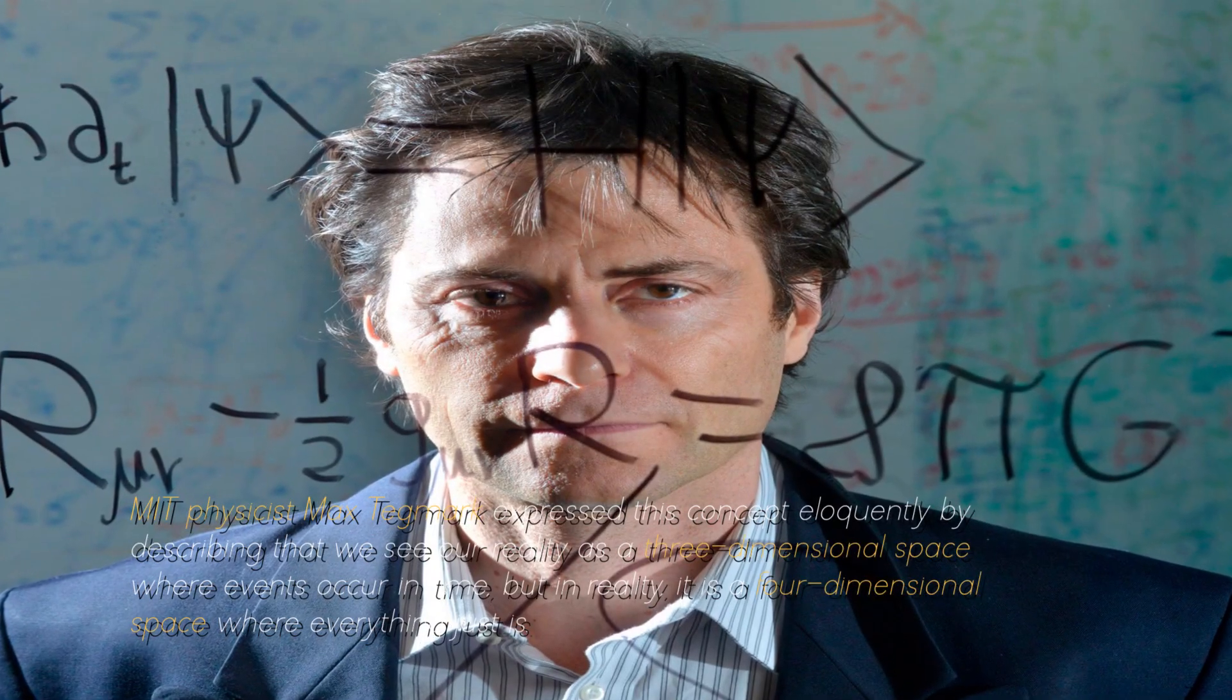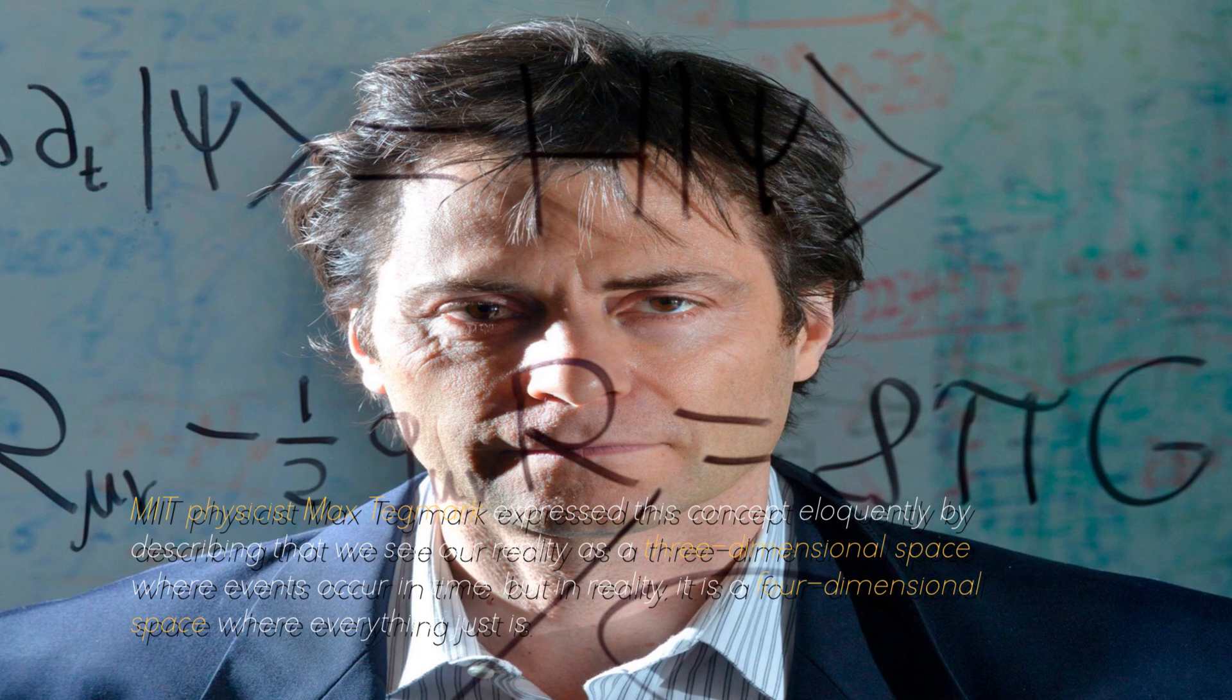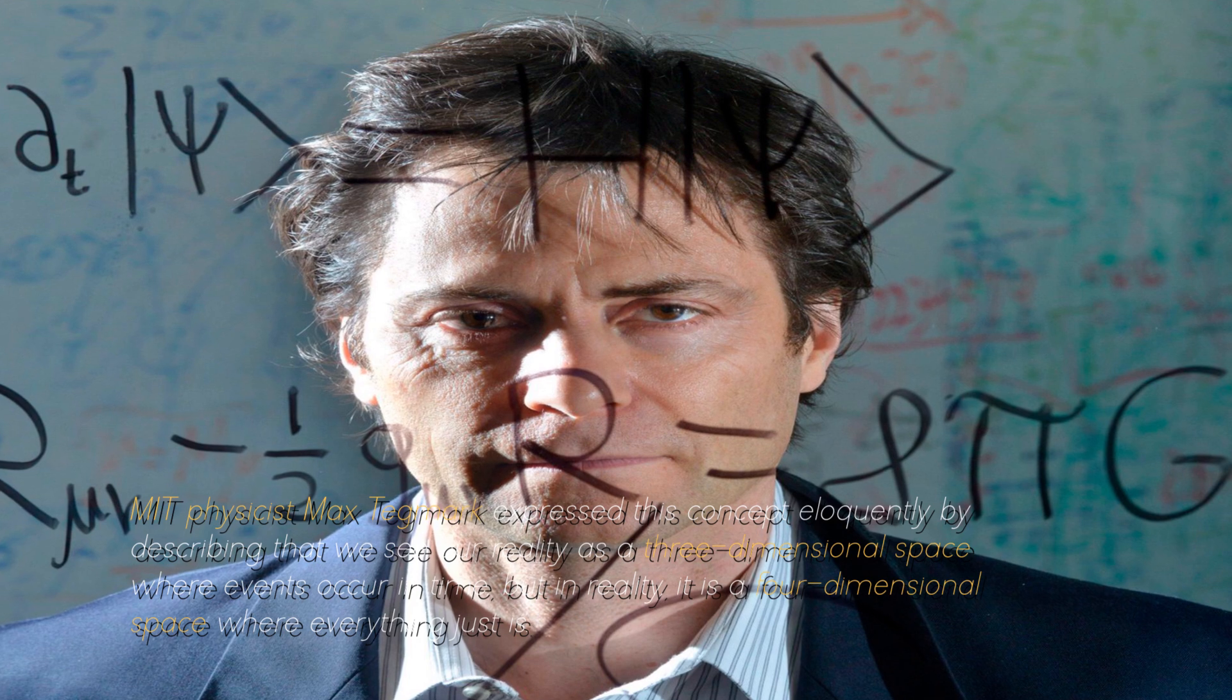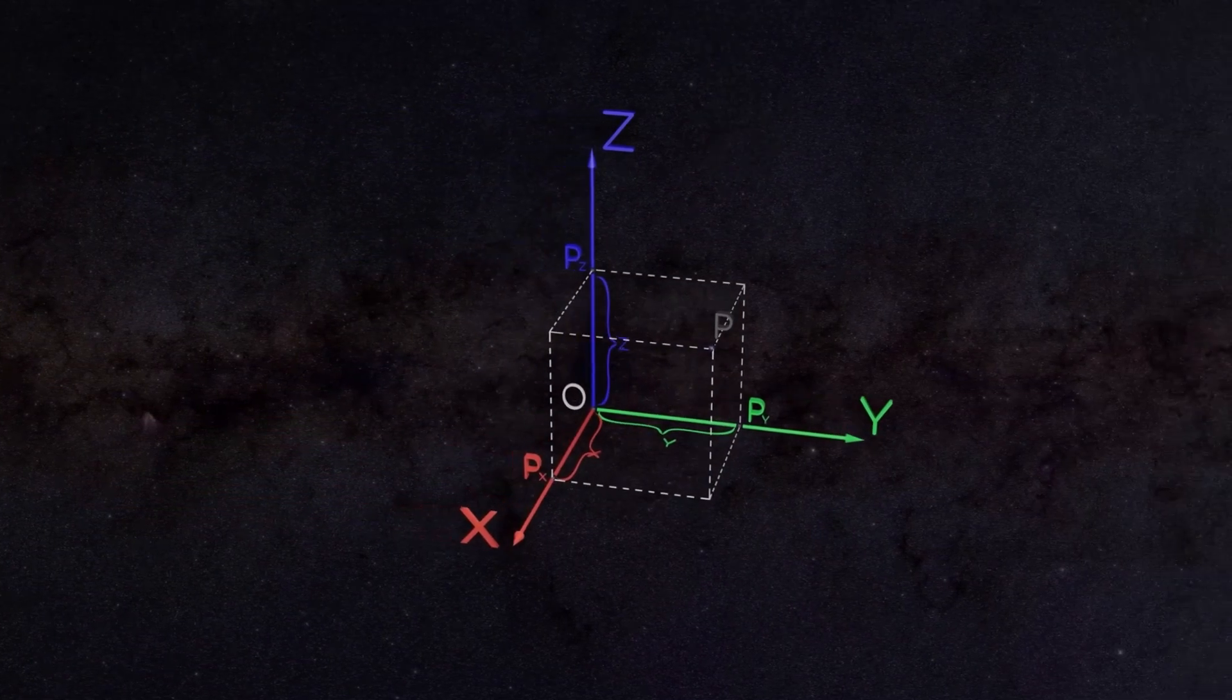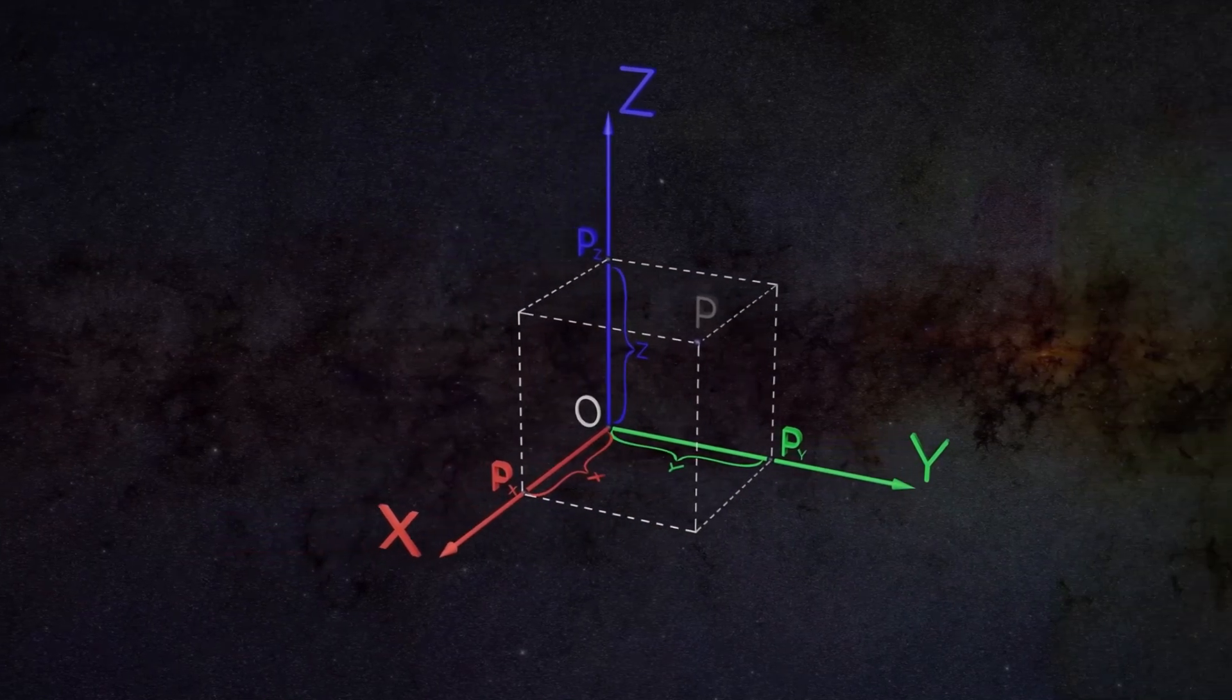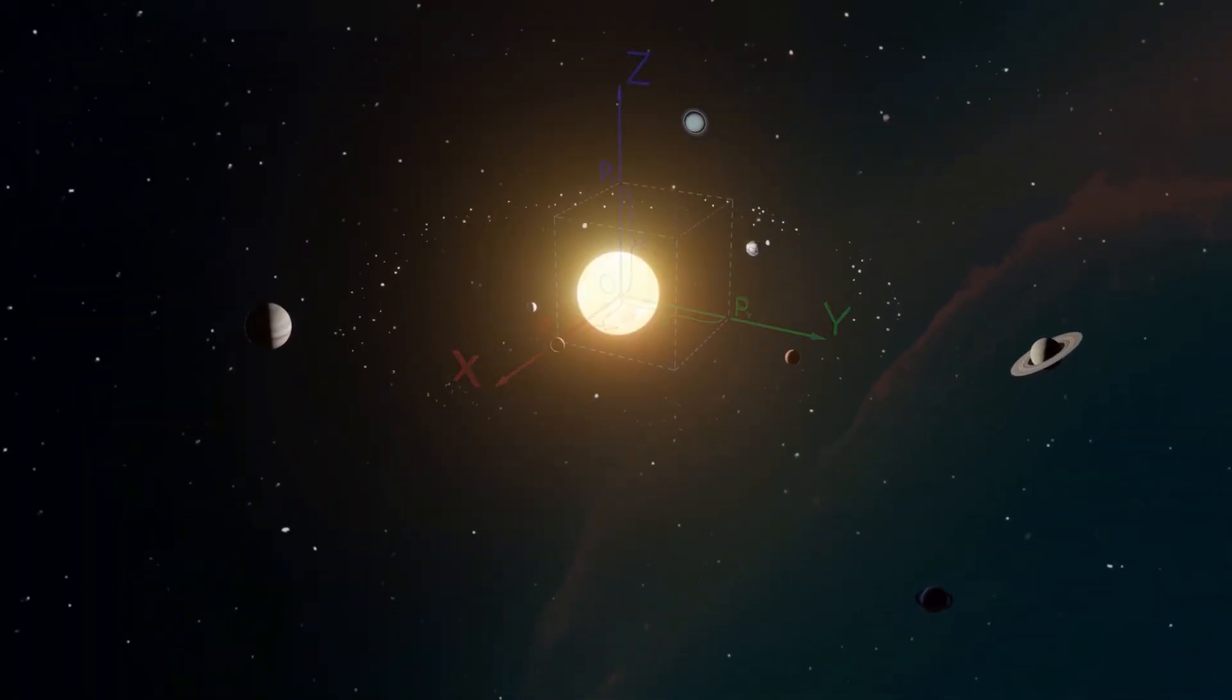MIT physicist Max Tegmark expressed this concept eloquently by describing that we see reality as a three-dimensional space where events occurred in time, but in reality, it is a four-dimensional space where everything just is. If this approach were true, then time would be revealed as an illusion, since nothing would undergo real change. Past, present, and future would coexist constantly. Certainly, these ideas are profound and challenging, but they are fascinating to ponder, as they illustrate how magical and enigmatic the universe can be.